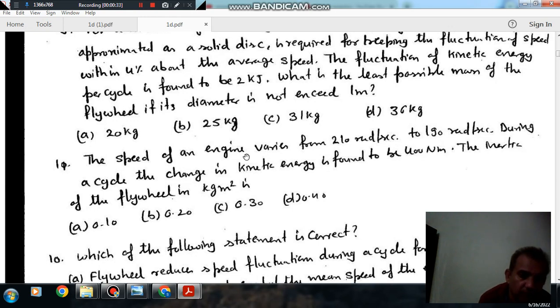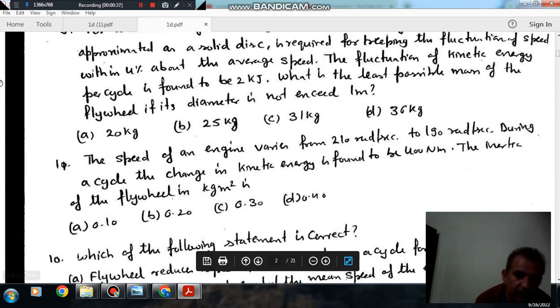Option A, 0.1. Option B, 0.2. Option C, 0.3. And option D, 0.4.